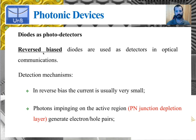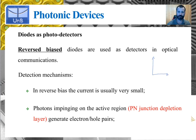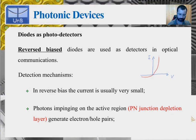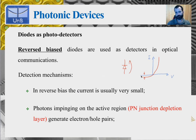Photodiodes are usually placed in a circuit in which they are reverse biased. Essentially, you have a diode which is reverse biased. If you look at the IV characteristics of a typical diode, we are in the region in which the voltage applied to the diode is negative — the reverse bias region — as opposed to what happens in the case of optical sources.